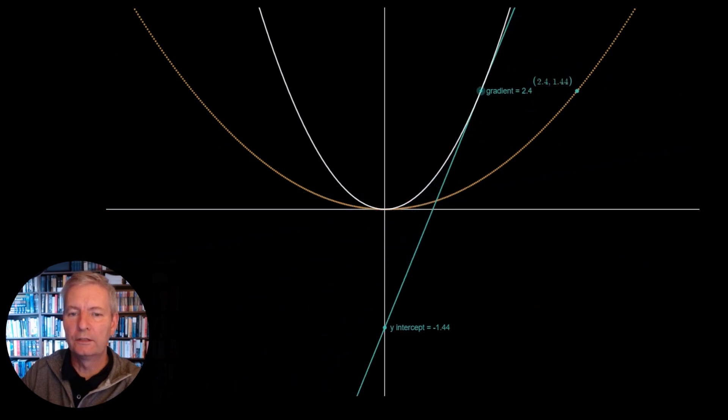Now we're interested in two points from this tangent line. We're interested in the gradient of the tangent whenever it touches the curve, and we're interested in the y-intercept of the tangent. So you can see these two points here. We have the gradient at this point here, which is 2.4. We have the y-intercept here, which is minus 1.44.